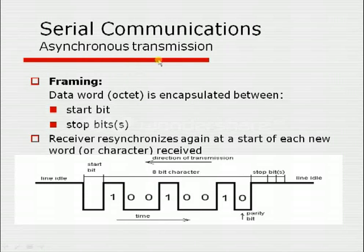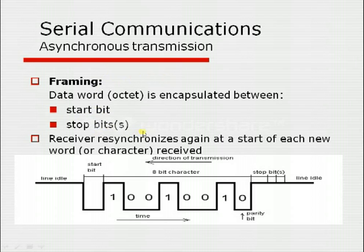In asynchronous transmission, data is sent character by character. Each character goes through a process called framing, and the output is called a frame. In framing, each character is added with additional bits: a start bit, a stop bit, and an optional parity bit. The start bit indicates to the receiver the beginning of a character, and the stop bit indicates the end. With these bits, the receiver and transmitter get synchronized.